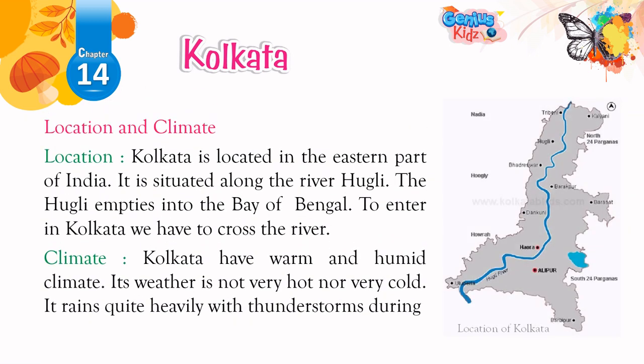Location and Climate. Kolkata is located in the eastern part of India. It is situated along the river Hooghly. The Hooghly empties into the Bay of Bengal. To enter Kolkata we have to cross the river. Kolkata has a warm and humid climate. Its weather is not very hot nor very cold. It rains quite heavily.